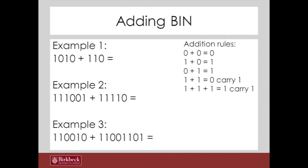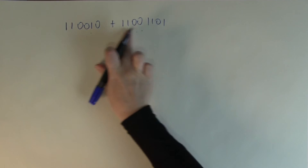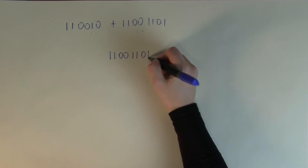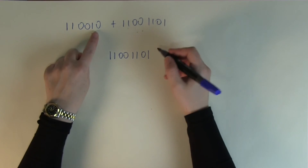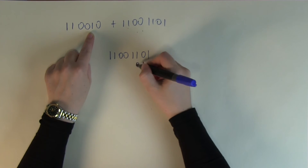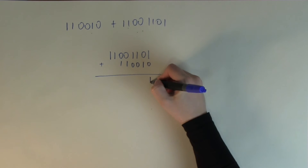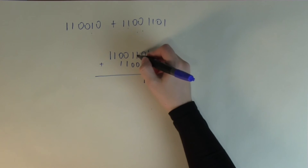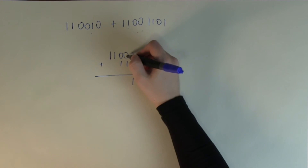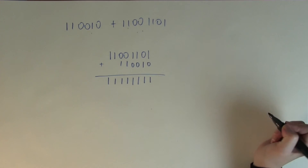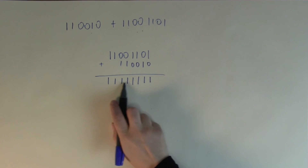Third example: 110010 add 11001101. The longer number is 11001101, so copy that on top, then copy the shorter number 011001 underneath aligned from the right. Adding: 1+0=1; 0+1=1; 1+0=1; 1+0=1; 0+1=1; 0+1=1; nothing to add to this 1 and nothing to add to this 1. That was a relatively simple addition and we ended up with all 1s.